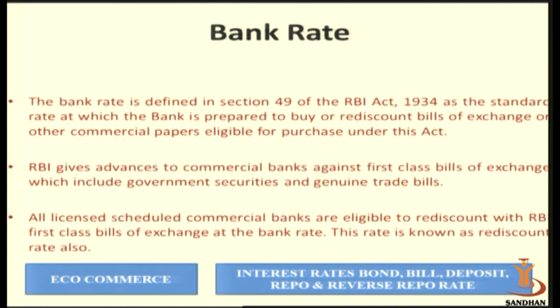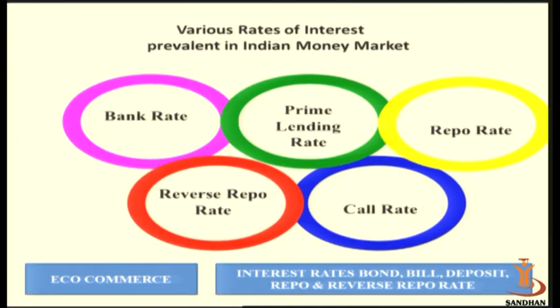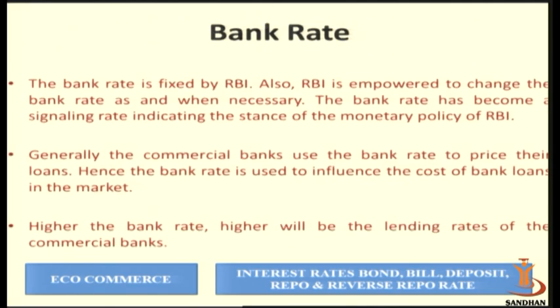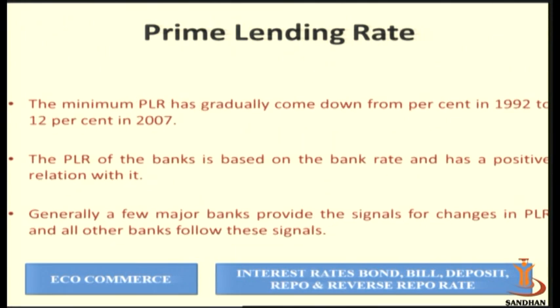RBI gives advances to commercial banks against first-class bills of exchange, including government securities and genuine trade bills. The bank rate is the rate associated with lending and advances. The Prime Lending Rate is associated with different types of securities, currently at 9.65%, and there is a positive correlation between the bank rate and the prime rate.